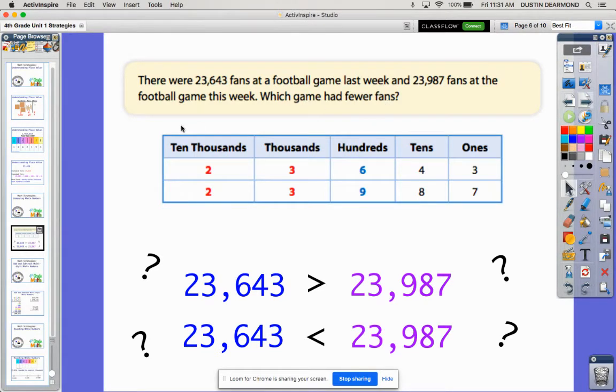So one strategy we use is using that place value chart. It's gone beyond just hundreds, tens and ones, and now we're working in the thousands, ten thousands, or even maybe the hundred thousands place up to a million. So they've filled in the place value chart with our two numbers: 23,643 and 23,987. Filling it in with each place value and separating it like this in place value form helps us to compare a little bit easier.